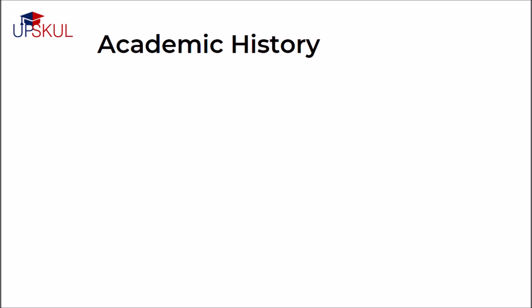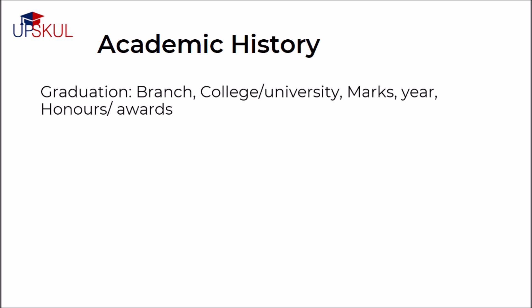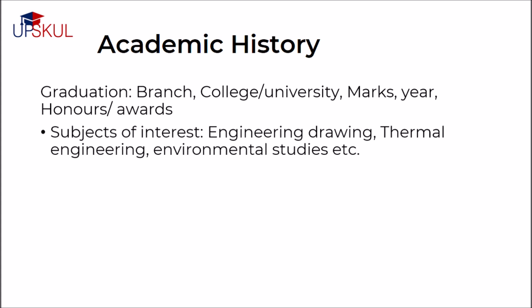You have to write about your education in reverse chronological order — first your college degree, then your 12th, then your 10th. In around five to seven lines, summarize everything you did during your academic days for each degree. For graduation, the first line should include your branch, college or university, aggregate marks, year of completion, and any honors or awards received for that degree.